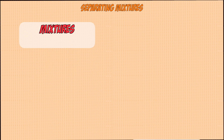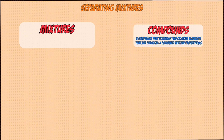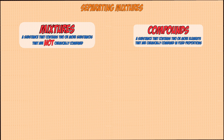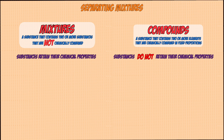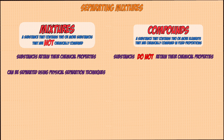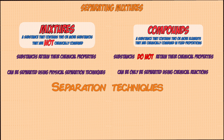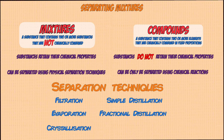Mixtures are similar to compounds but they have one big difference: they still consist of two or more elements, however the elements are not chemically combined. This means the substances in the mixture retain their chemical properties. Mixtures can be easily separated using physical processes, whereas compounds cannot — only a reaction can separate a compound.